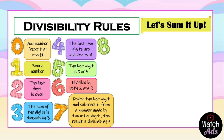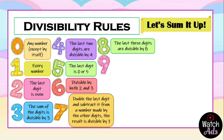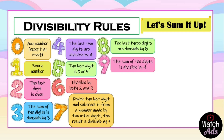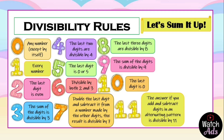A number is divisible by eight if the last three digits are divisible by eight. To check divisibility by nine, we add all the digits — the sum should be divisible by nine. A number is divisible by ten if it ends in zero.